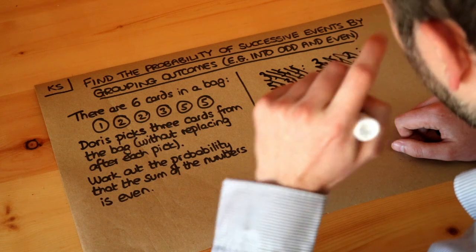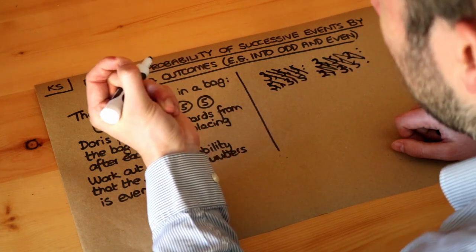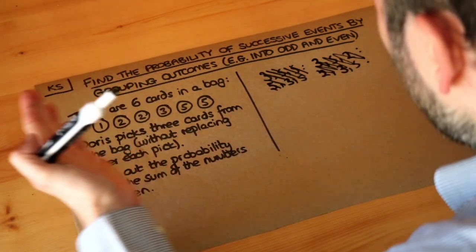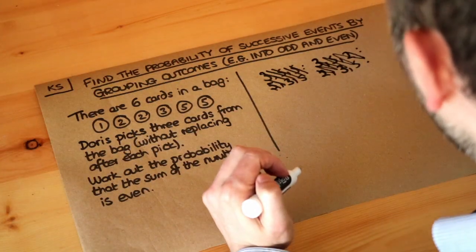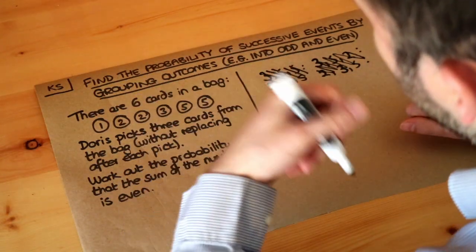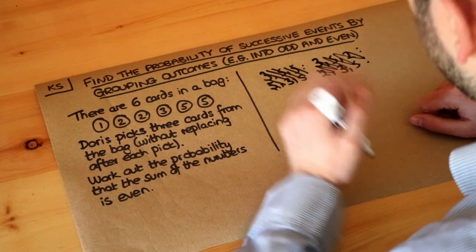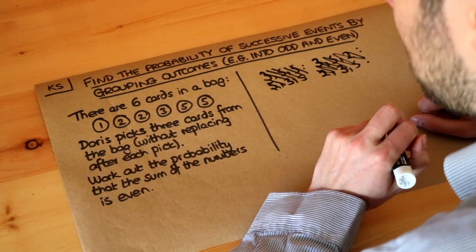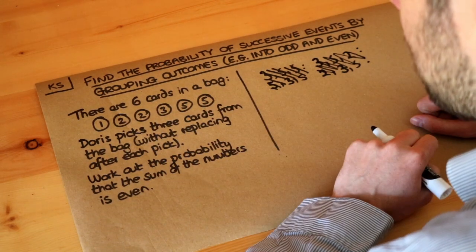Instead, we might think about whether each of the cards we pick is odd or even. So we're kind of grouping the cards into two groups, even cards and odd cards. And that's going to make it much simpler to work out this problem because even and odd, that's only two possibilities, rather than how many different numbers there are.